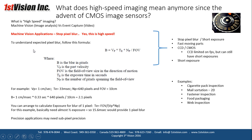Looking at machine vision applications first, we really want to talk about stopping pixel blur. These still high-speed applications might include solder pad inspection, mail sortation, reading a 2D code, fast inspection, food packaging, and web applications. All of these require an exposure short enough to actually stop the pixel blur.